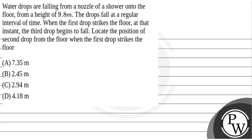Let's read the question. Water drops are falling from a nozzle of a shower onto the floor from a height of 9.8 meters. The drops fall at a regular interval of time. When the first drop strikes the floor, at that instant, the third drop begins to fall. Locate the position of the second drop from the floor when the first drop strikes the floor.